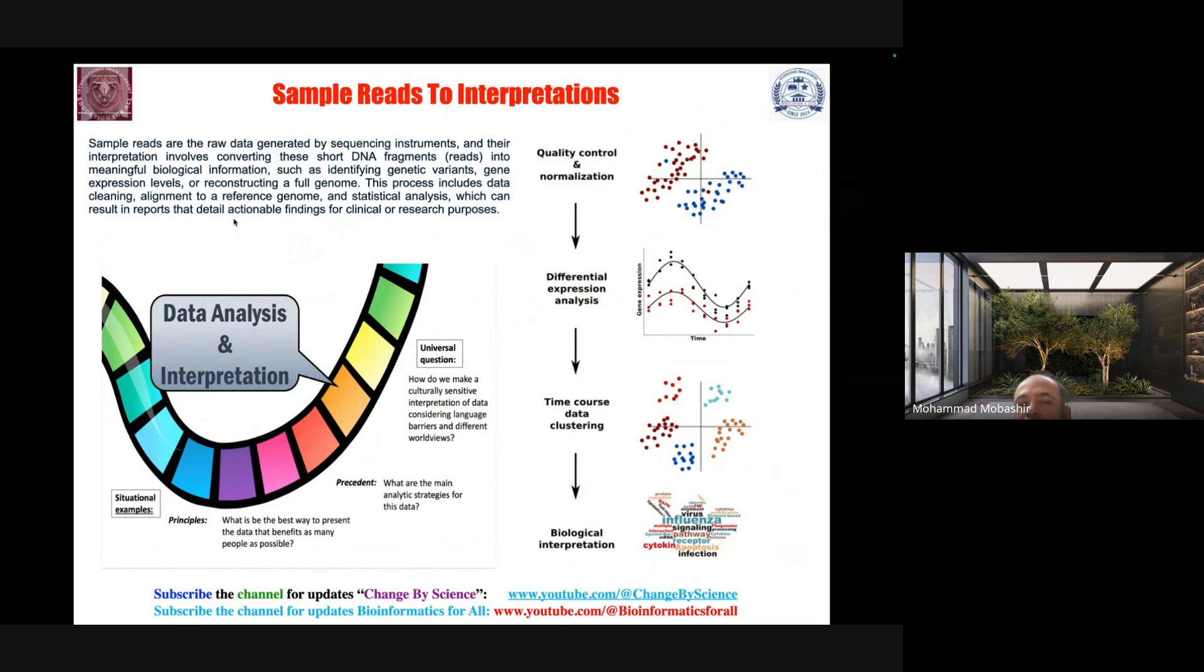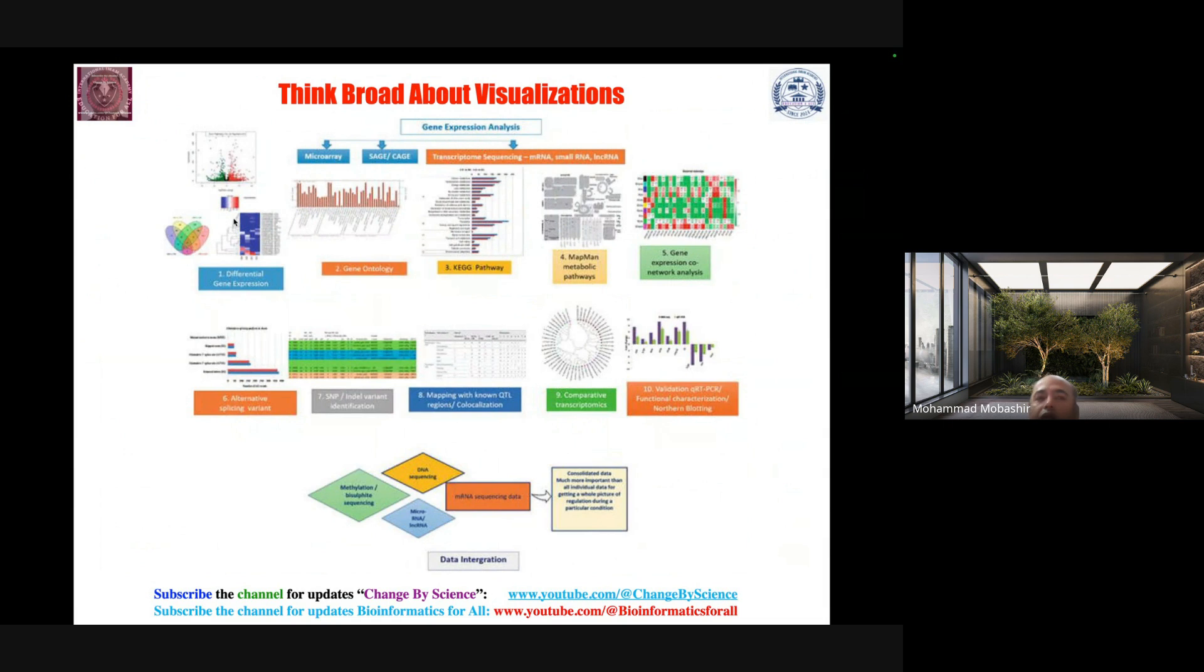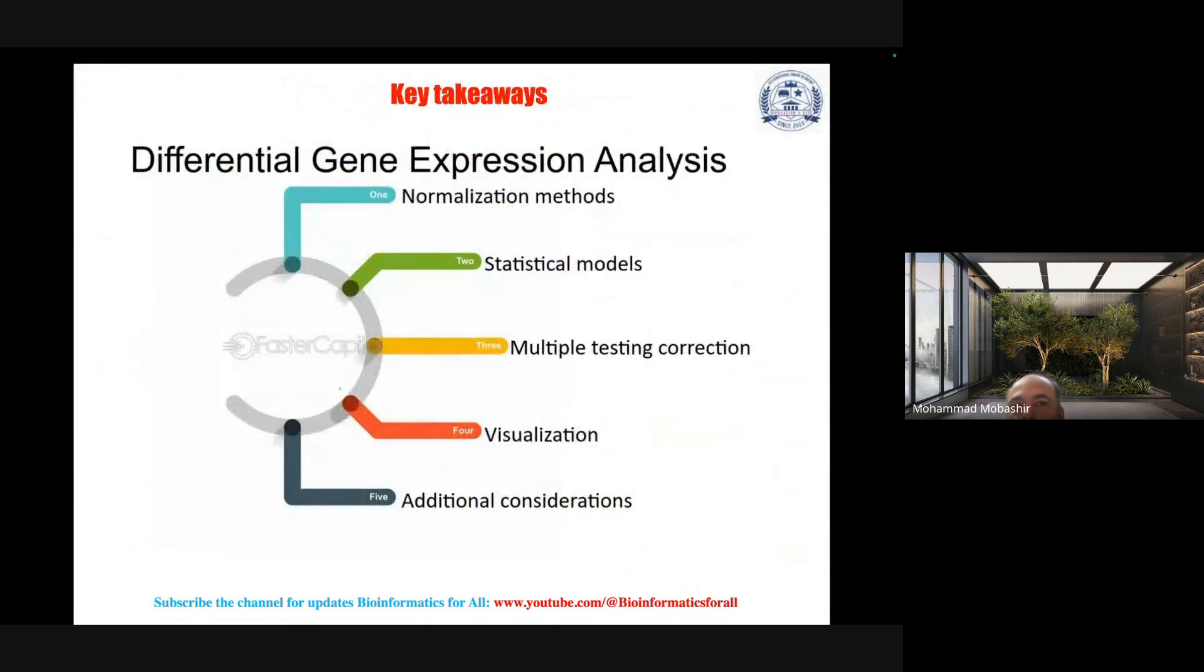This process includes data cleaning, alignment to a reference genome, and statistical analysis which can result in reports that detail actionable findings for clinical or research purposes. Think about broad thinking: if you're thinking about higher impact journals, you need to think about well-organized data visualizations and try to bring the idea in four to ten figures with conclusions, so audiences can easily understand from just figure visualization what you're going to say in the entire paper instead of reading the whole paper.